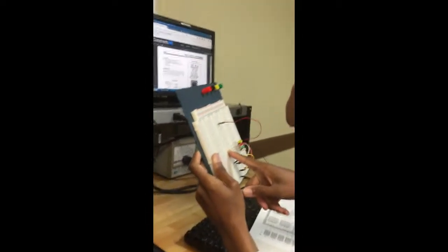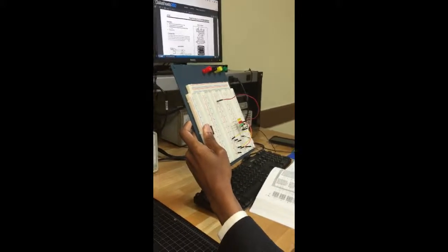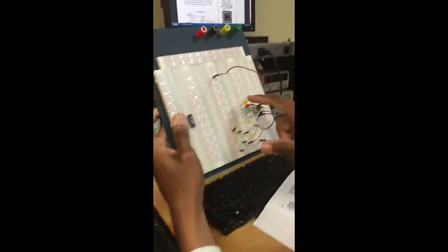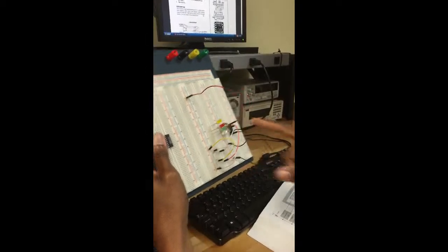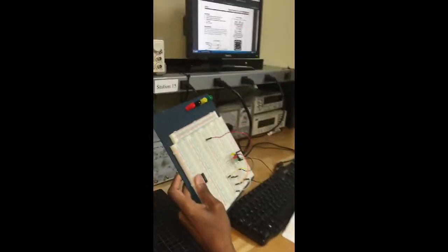This is a 5 volt power source. Then I have 1K resistors right here. You always need to have a resistor connected to your LED. The reason why is because too much current will kill your LED.